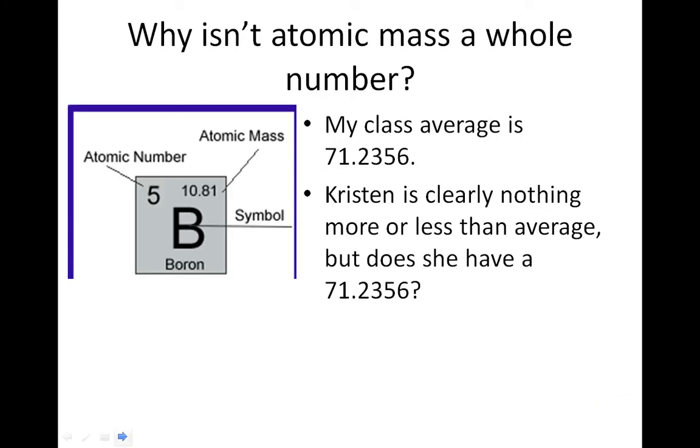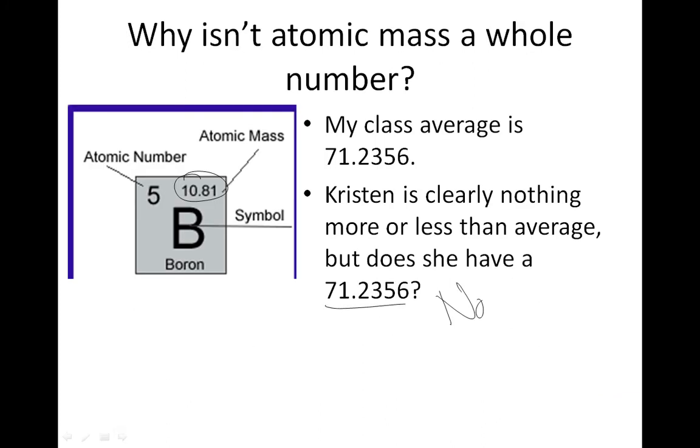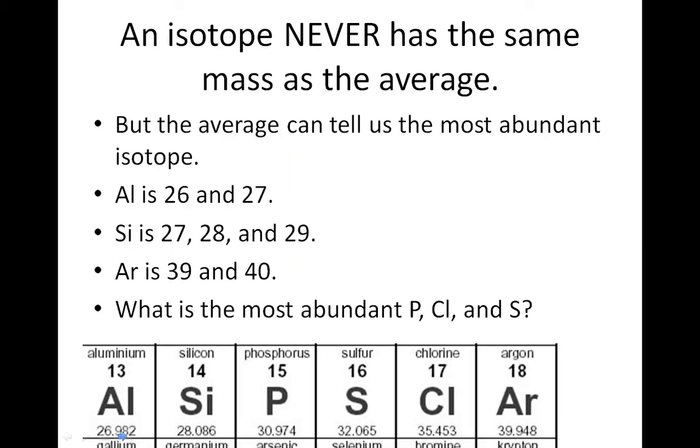Why is an atomic mass a whole number? So when you look at the periodic table and you look at the atomic mass, these are decimals. My class average is 71.2356. Kristen is clearly nothing more or less than average, but does she have a score of 71.2356? The answer is no. Average is where you take all of them and add them together. So when we were talking about isotopes, these isotopes are different because I could have oxygen-15 or I could have oxygen-16, and the only difference is the mass of it. So that would be like you're all people, and the only difference between you is the score on your test if I'm a heartless person. So why isn't a whole number? Because the average does not equal any one score.